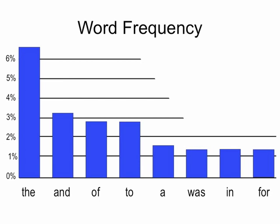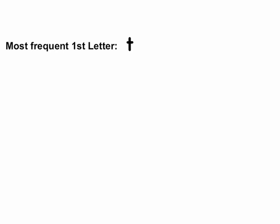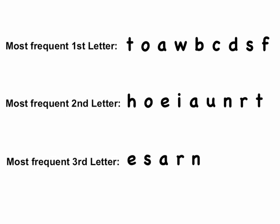I'm going to give you one extra hint, just in case there's anyone who still wants to try it. The most frequent first letter of English words is T, followed by O, then A. The most frequent second letter is H, followed by O, E, and I. The most common third letter is E, S, A, R, and N. So that gives you an added little boost.